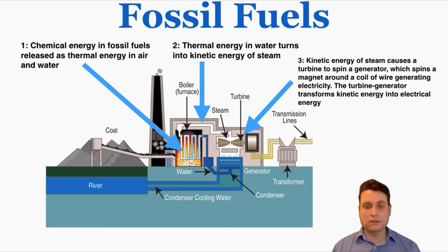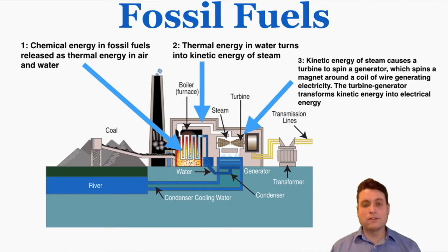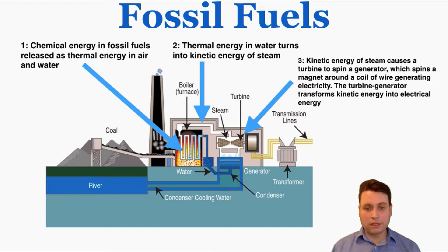Almost all of the power stations we're going to look at in this unit generate electricity by spinning a magnet around a coil of wire — they just have different ways of doing it. For fossil fuels, the way they spin that wire is by heating up water, turning it into steam, and causing the steam to impact a turbine, which makes it spin and makes the magnet spin in the generator, creating electricity.